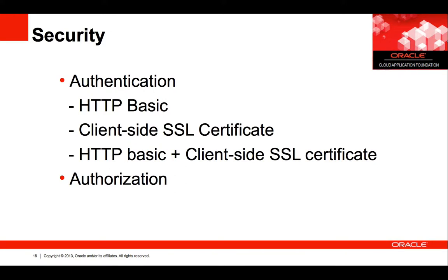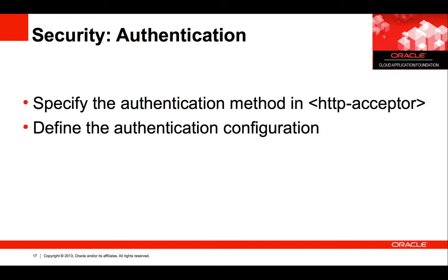Security. We added support for authentication and authorization to Coherence REST. Authentication support includes HTTP BASIC, client-side SSL certificate, and client-side SSL certificate together with HTTP BASIC. Authorization support relies on the underlying Oracle Coherence Extend authorization framework. To enable authentication, we need to specify the authentication method in the HTTP acceptor, and then define the authentication configuration.